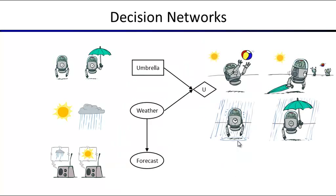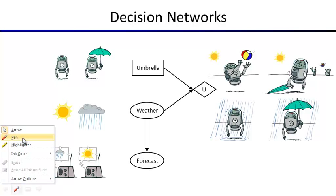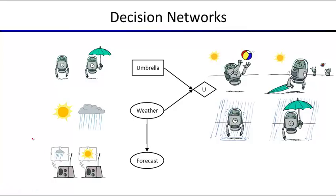Here's an example. We have different types of nodes. We still have Bayes net type nodes — we still put them in circular nodes. We have two random variables here: the first one is weather, which could be sunny or rainy; the second one is the forecast, which could be a sunny forecast or a rainy forecast. There's an arrow between the two because we think the real weather will influence what the forecast is going to be.